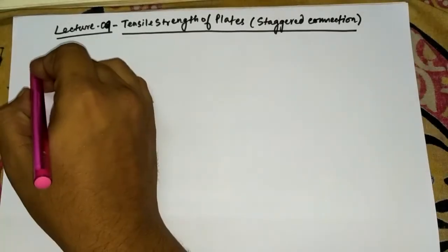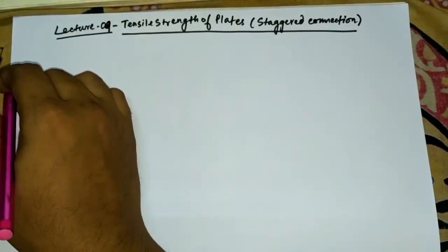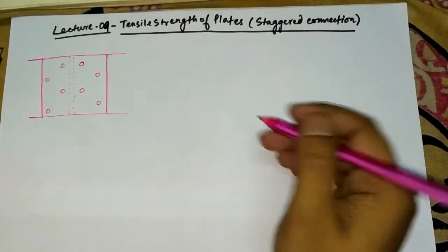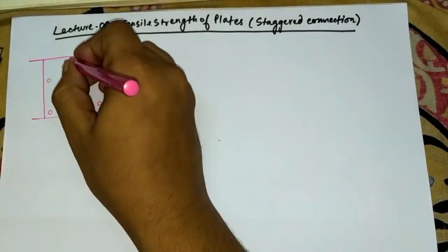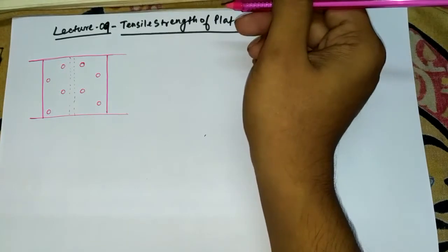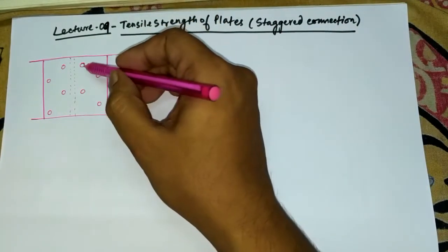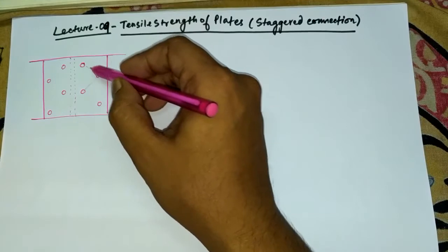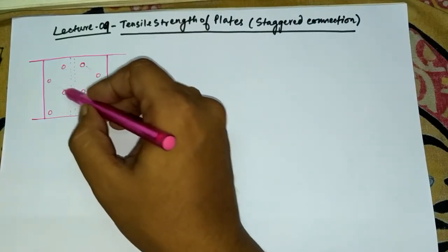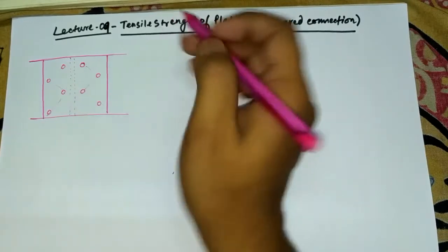First of all, what is a staggered connection? Let me show you a diagram. Here I have shown a butt joint, and you can see the pattern of bolting is not in a straight line — it is in a zigzag manner. So this is a staggered connection, also called zigzag bolting.